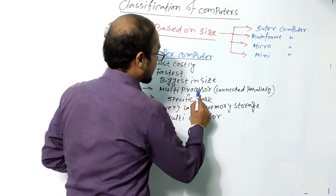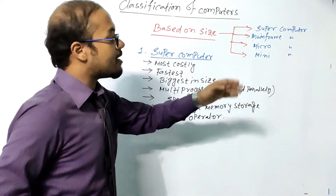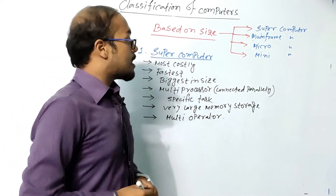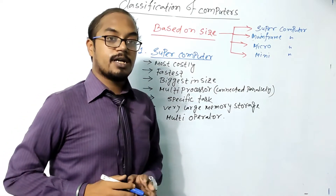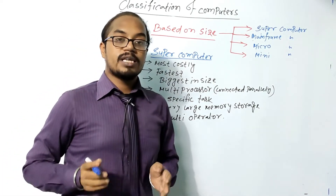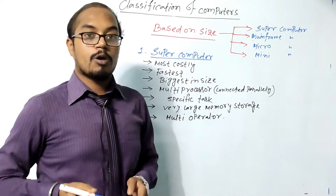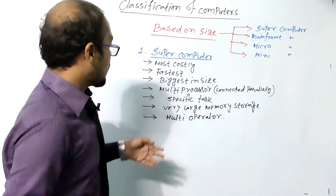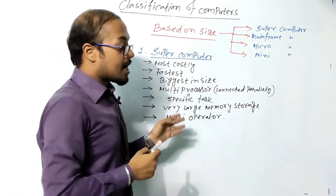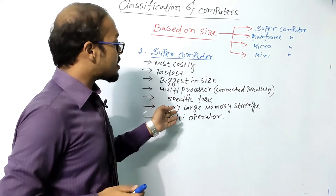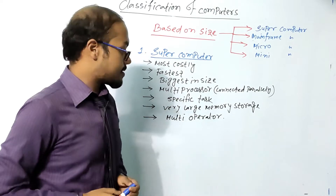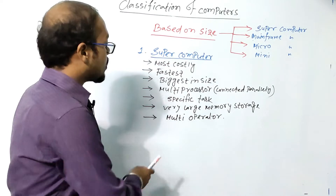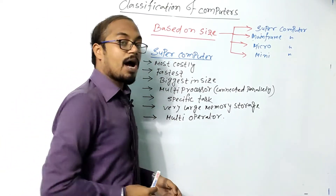Supercomputers feature multiprocessors connected in parallel — lots of processors working in parallel to do a specific task, or dividing one task into various parts. These computers are designed for special or specific tasks, have very large memory storage, and support multiple operators.